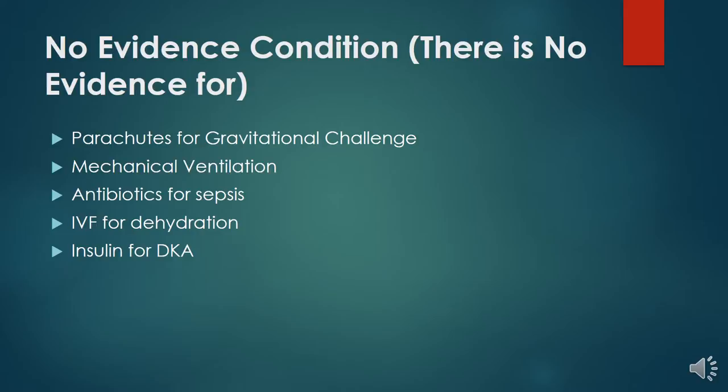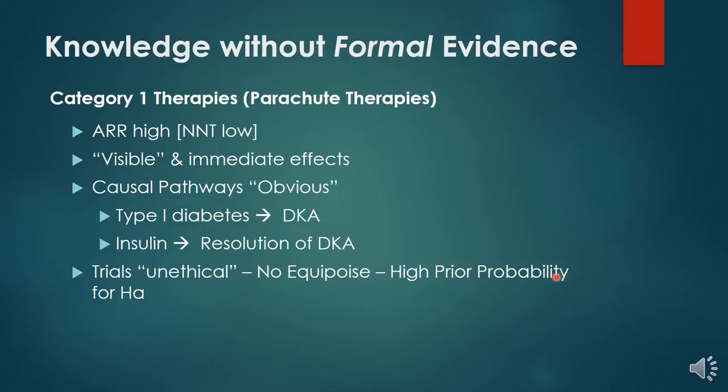Let's consider situations in which we could legitimately say we have no evidence for something — a 'no evidence condition.' We might say we have no evidence for parachutes for gravitational challenge, which harkens to a spoof article in the British Medical Journal approximately 12 years ago. We can say we have no evidence for mechanical ventilation's benefit on mortality, no evidence for antibiotics for sepsis, intravenous fluids for dehydration, or insulin for diabetic ketoacidosis. I call these category one therapies, or parachute therapies.